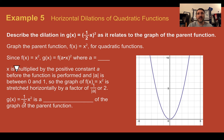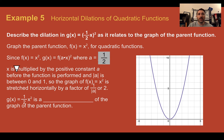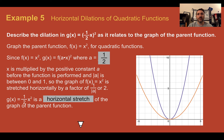Example five: horizontal dilations of a quadratic function. Describe the dilation in g of x equals one half x, quantity squared, as it relates to the parent function. Here the a value is one half and it is multiplied by x before being raised to the second power, so this is horizontal — it's going to stretch it, making it a little bit wider. That half made everything go twice as far wide before it went up the same amount, the opposite of the vertical dilation where it stretched it upward.